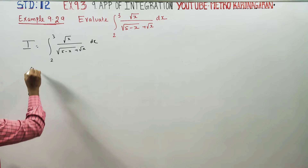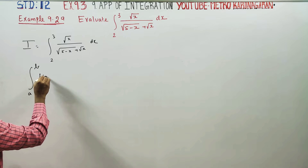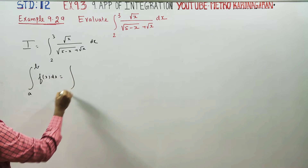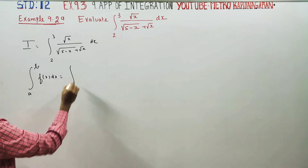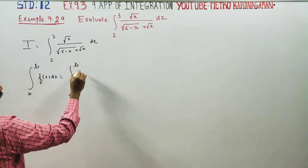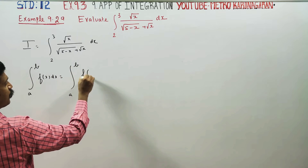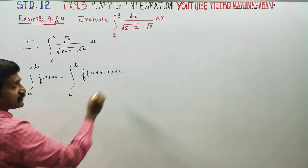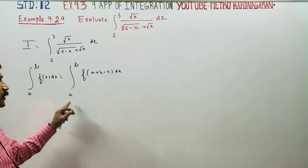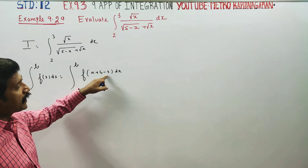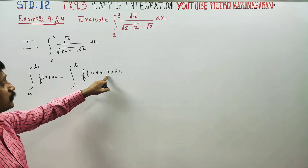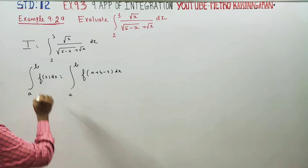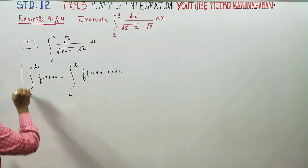The integral from a to b of f(x) dx can also be written as the integral from a to b of f(a plus b minus x) dx. The lower limit and upper limit remain the same; you substitute a plus b minus x into the integral. This is the property we are going to use.